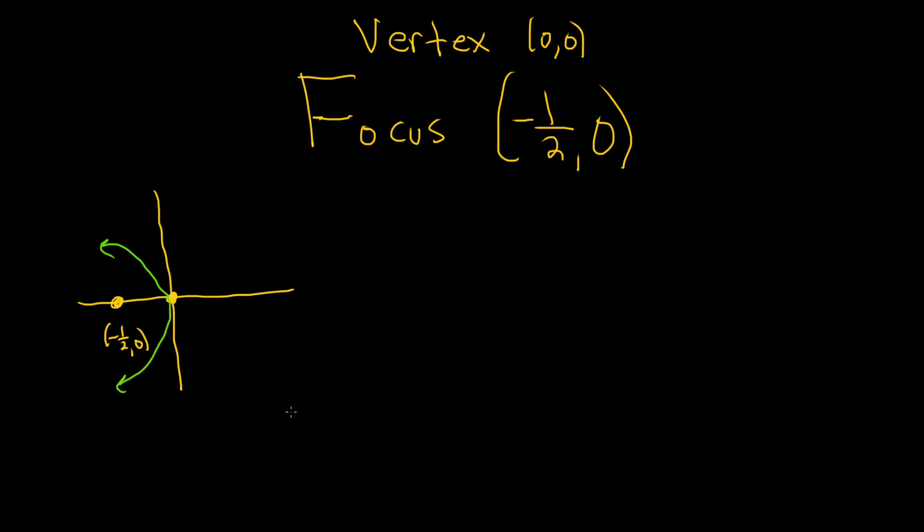So for a parabola that opens left and right, the y is always squared in the formula. So that's how I memorize it. So if it opens left and right, the y is squared. If it opens up and down, the x is squared.